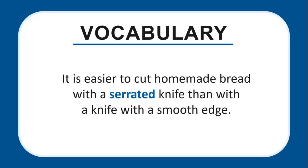It is easier to cut homemade bread with a serrated knife than with a knife with a smooth edge. Serrated is contrasted with smooth — and since it's a knife, the opposite of smooth is jagged, meaning sharp with a blade kind of like a saw. It's the jagged versus smooth distinction that defines the word serrated.